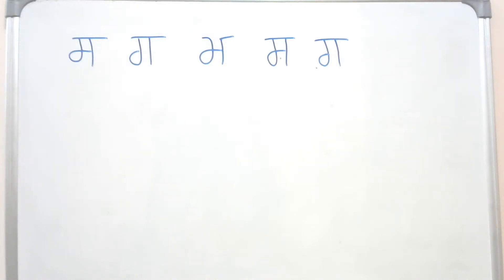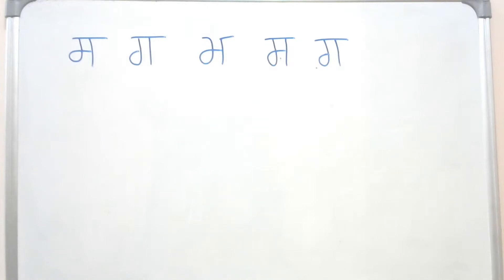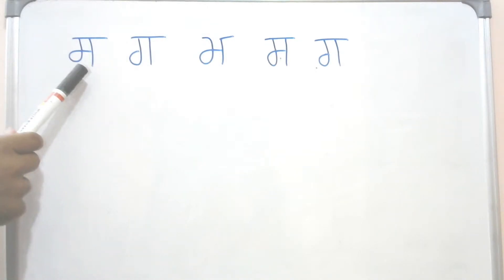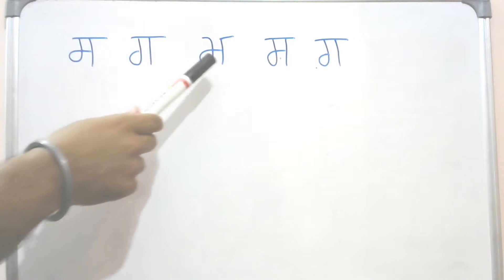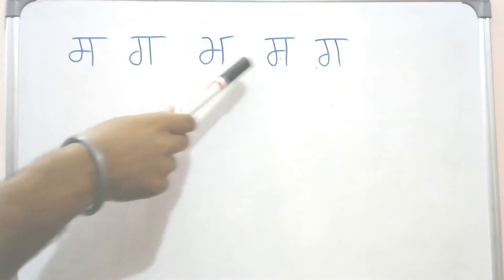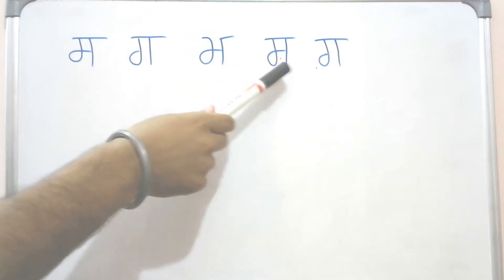Welcome to another session of Gurmukhi letters. In this video, we are going to look at some confusing Gurmukhi letters: Sassa, Gagga, Mamma, Sassi Pairbindi, and Gagge Pairbindi.